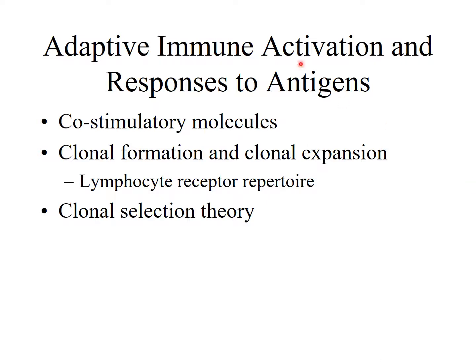When you look at clonal expansion, remember from the last lecture: one B cell gets activated — one becomes two, four, eight, sixteen, and so forth. That is clonal expansion; each new cell is an exact clone of the first. You do not want that happening uncontrolled, because that's when you end up with certain types of cancer. So you have to have a secondary switch triggered at the same time as the primary switch, to confirm yes, this is actually needed — or if not switched on, to signal the cells are not needed right now.